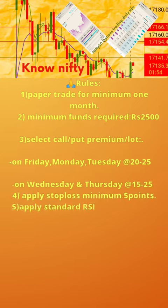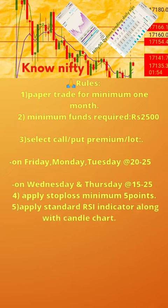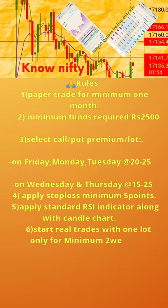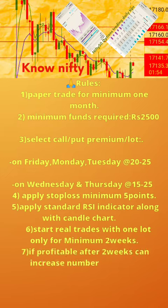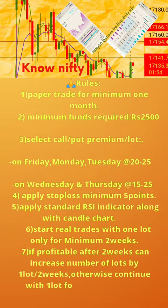Rule 4: apply stop loss minimum 5 points. Rule 5: apply standard RSI indicator along with candle chart. Rule 6: start real trades with one lot only for minimum 2 weeks. Rule 7: if profitable after 2 weeks, can increase number of lots by 1 lot for 2 weeks; otherwise continue with one lot for further 2 weeks.